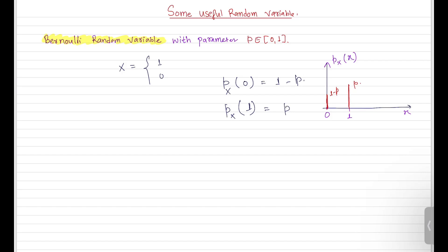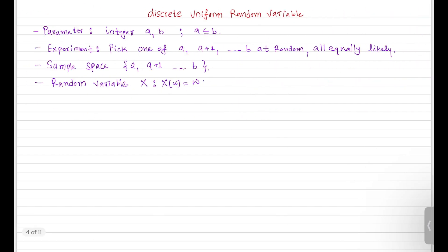Now let's look at one more random variable — the discrete uniform random variable. Uniform random variables are useful in any context where there is an assumption that all the outcomes in a certain range are equally likely.